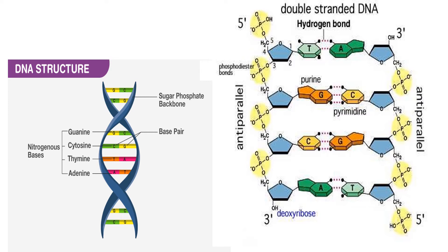The nitrogenous bases of the two separate polynucleotide strands are bound together according to base pairing rules: adenine combines with thymine and cytosine combines with guanine via hydrogen bonds to make double-stranded DNA. The complementary nitrogenous bases are divided into two groups — pyrimidines and purines. In DNA, the pyrimidines are thymine and cytosine; the purines are adenine and guanine. The two strands of DNA run in opposite directions to each other and are thus anti-parallel. This is the structure of DNA.